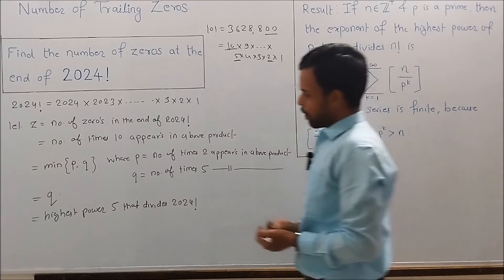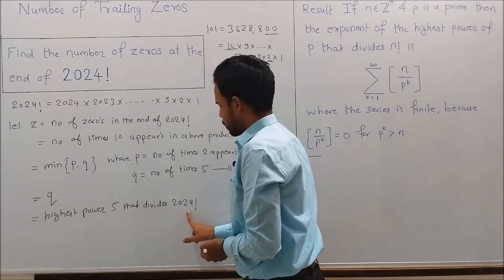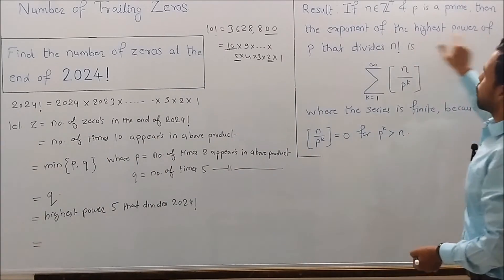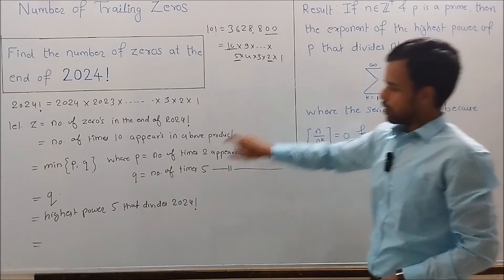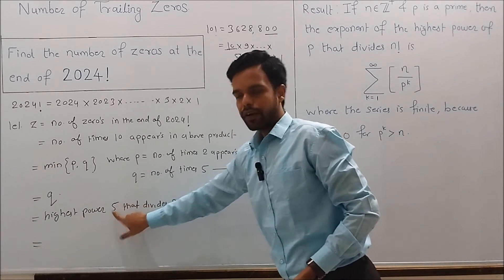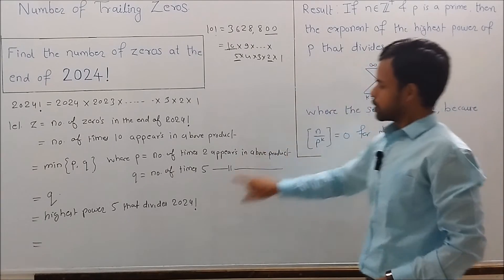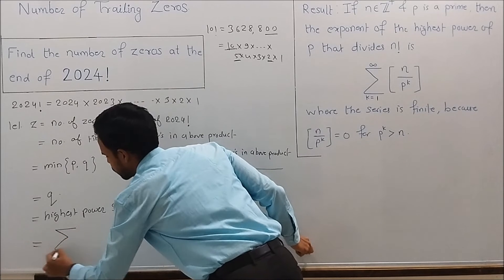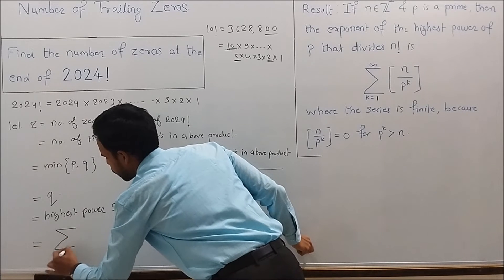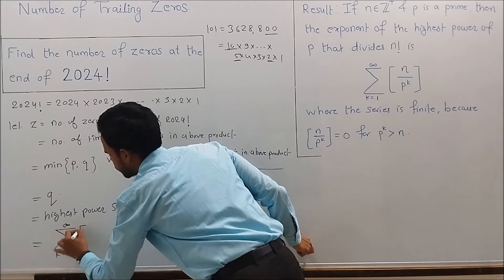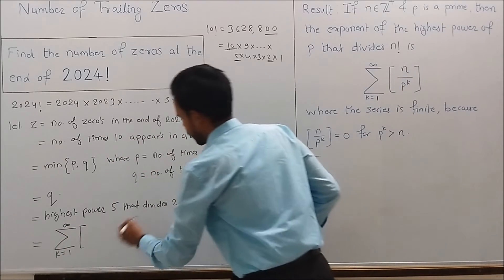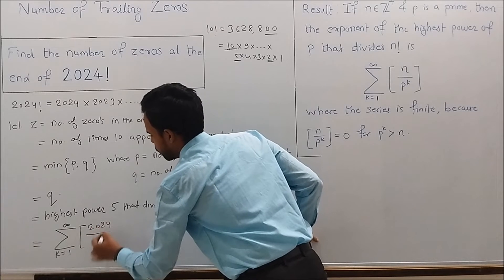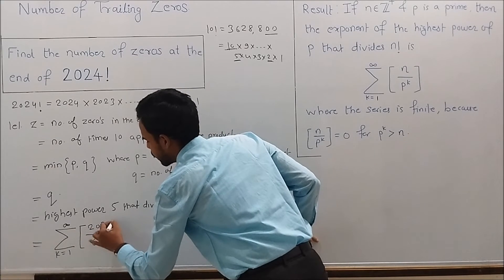We need to find the highest power of 5 that divides 2024 factorial. Here p = 5 and n = 2024. Using the formula, this equals the summation over k from 1 to infinity of floor(2024 / 5^k).